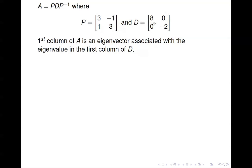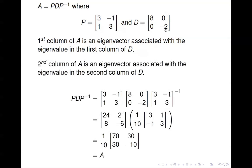D consists of the eigenvalues, and the order you put the eigenvectors into P doesn't matter — however, once you establish an order, you must keep it consistent for both P and D. The eigenvector 3, 1 came from lambda equals 8, so eigenvalue 8 goes in the first diagonal entry of D. The eigenvector negative 1, 3 in the second column of P corresponds to lambda equals negative 2 in D. If we multiply P, D, P inverse, we get back A — confirming our answer.